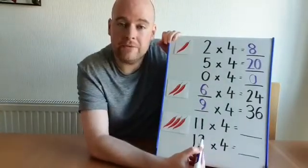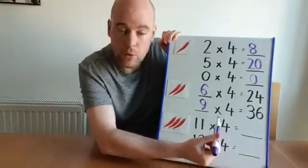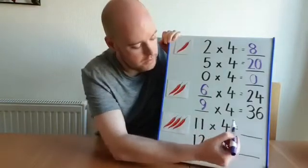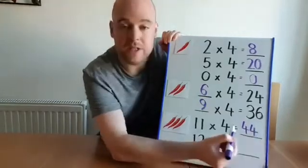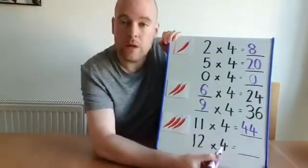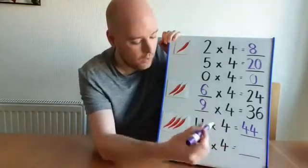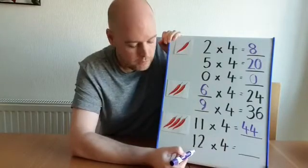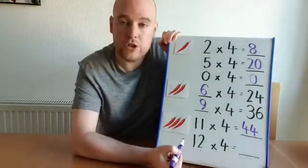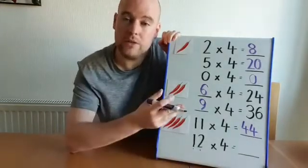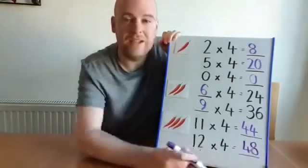For the two-chilli challenge: what do I have to times by 4 to get 24? I could use inverse operations — 24 divided by 4 is 6, so 6 times 4 is 24. And what do you have to times by 4 to get 36? I know 10 times 4 is 40, and 36 is 4 less, so that must be 9 times 4 — 9 times 4 is 36. For the extended challenge, 11 times 4: since 11 has 1 ten and 1 one, multiplying by 4 gives 4 tens and 4 ones, which is 44. And 12 times 4: I could add 4 more to 44, or I know 10 times 4 is 40 and 2 times 4 is 8, and putting those together gives 48. So the product of 12 and 4 is 48.